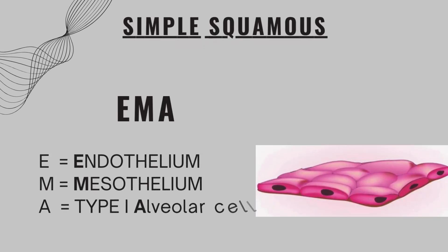For simple squamous epithelium, the mnemonic is EMMA. Imagine an American girl named Emma. In Emma, the E stands for endothelium, the double-M stands for mesothelium, and the A stands for alveolar cells.